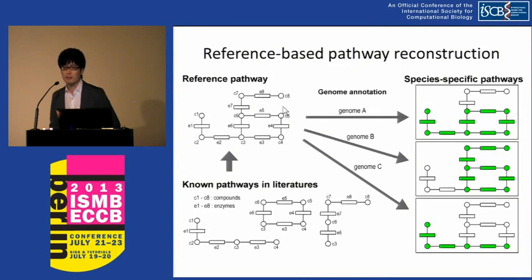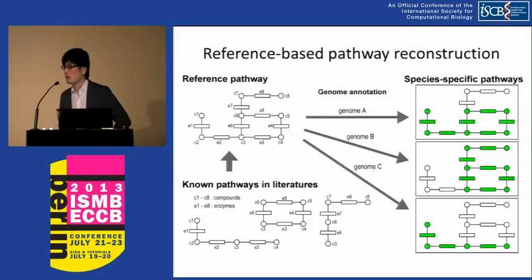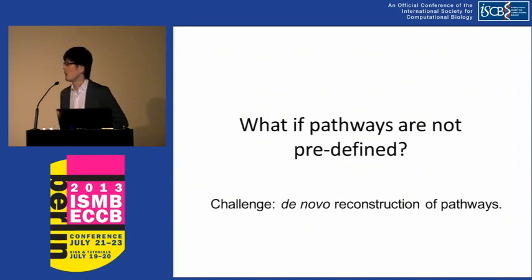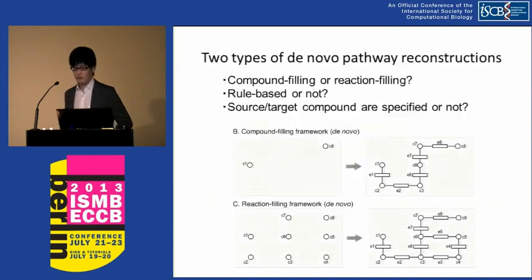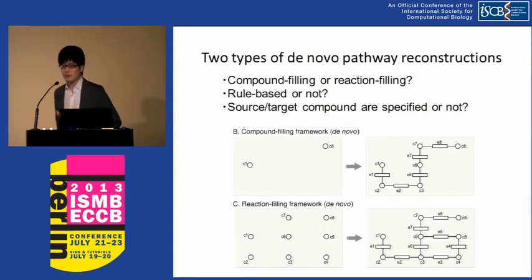If we know some information about genome sequences, we can map genes onto the reference pathway, resulting in species-specific pathways shown in green. In that sense, species-specific pathways are just a part of a reference pathway. But the focus of this study is different: what if pathways are not predefined? This is the challenge, and de novo pathway reconstruction is needed. There have been some studies for de novo pathway reconstruction.